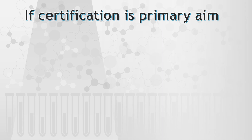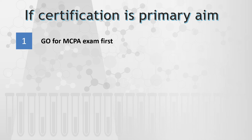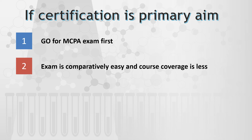Now, if your aim is to get a certification — for example, your organization demands you complete one architect certification this year or it is mandatory — then I suggest going for the MCPA exam. MCPA is comparatively easier, and if you look at the course coverage, MCPA covers far less than MCI. I would say MCPA is a kind of subset of MCI in terms of topics. The detailing of those topics differs, but from a preparation standpoint, it is easier to prepare for the MCPA exam.